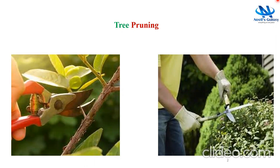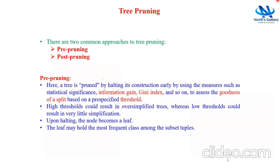As the name itself indicates, in pre-pruning, the pruning is done at the time of construction of the tree itself, whereas in case of post-pruning, the tree is first grown fully and after that pruning is done. In pre-pruning, certain methods like information gain and Gini index are used to assess the goodness of the split based on a certain threshold — measuring whether a particular split is going to give good results or not. If the threshold is satisfied, the split is allowed; otherwise, it is not.